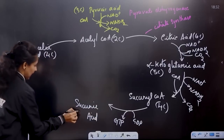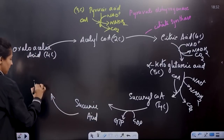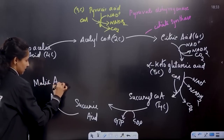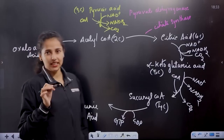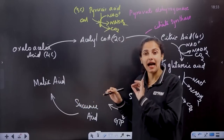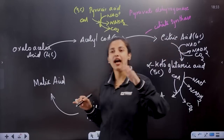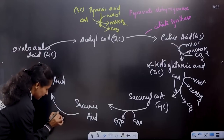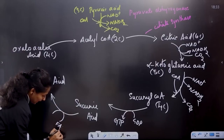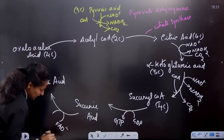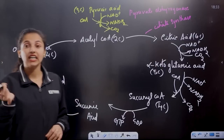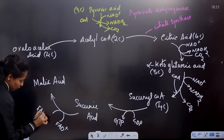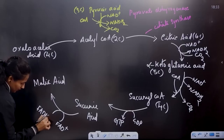From succinyl acid we get malic acid. In the conversion from succinic acid to malic acid, hydrogen is removed and FAD+ receives it, forming FADH2, another energy-rich compound.